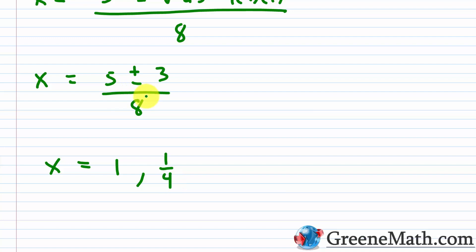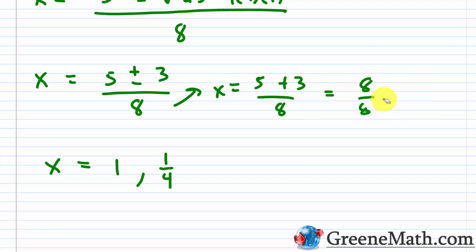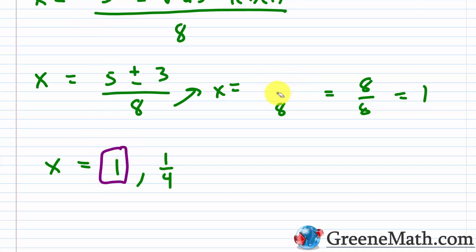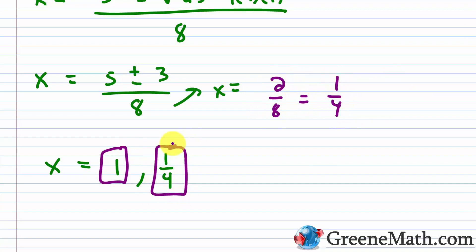Breaking this into two solutions: 5 plus 3 over 8 gives us 8 over 8, which is 1. And 5 minus 3 over 8 gives us 2 over 8, which is 1 fourth. So x equals 1 or x equals 1 fourth. Notice how much quicker that was versus completing the square or even factoring. Using the quadratic formula is generally the fastest method.